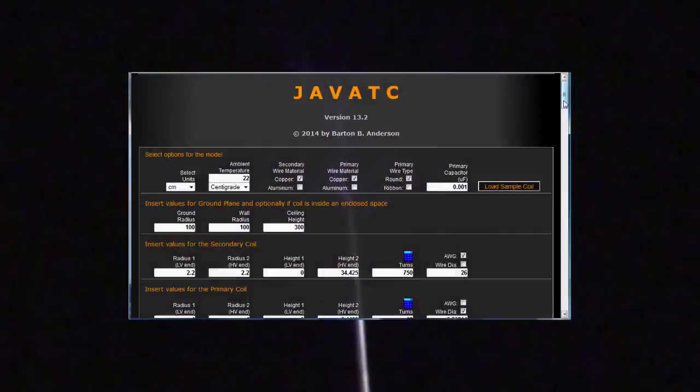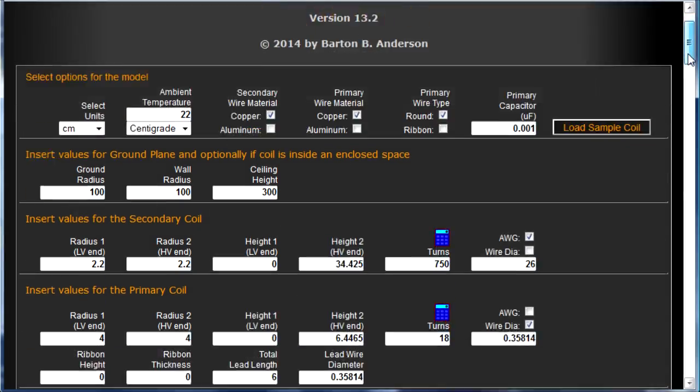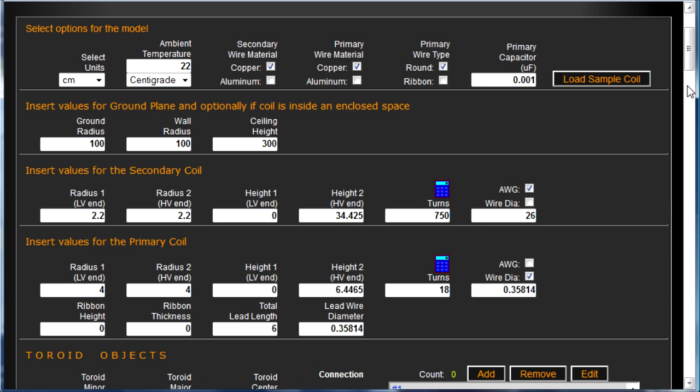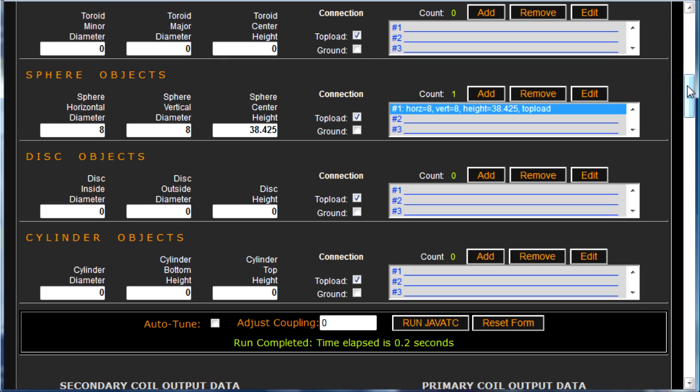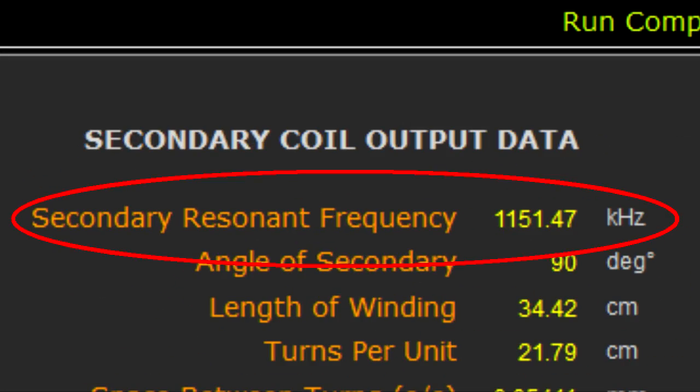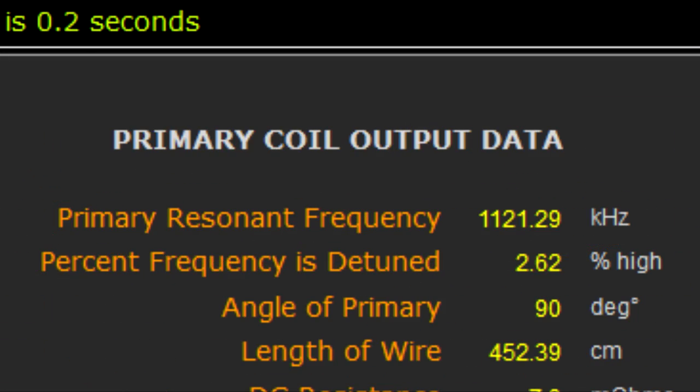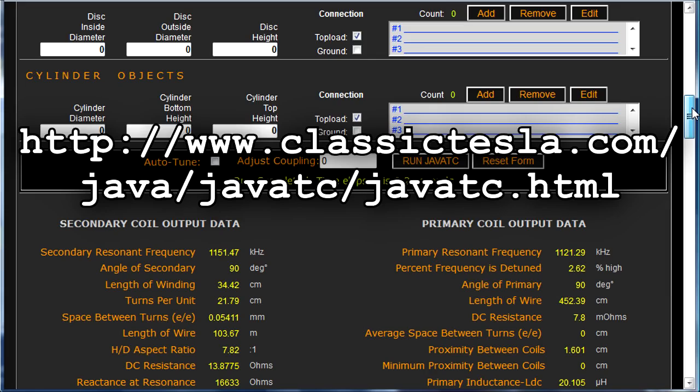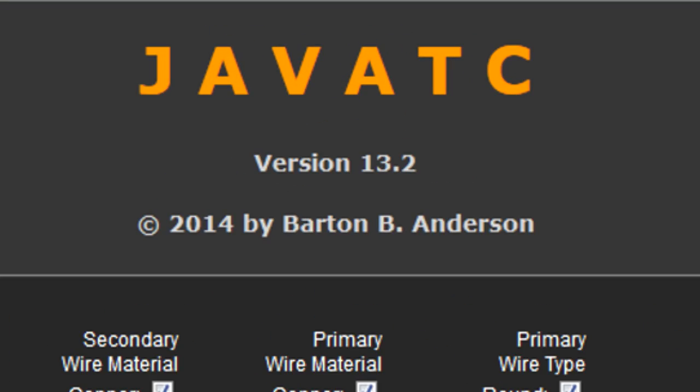I got them both to have the same resonant frequency by first using an online calculator. I spent a lot of time playing with the dimensions to come up with something that I could build, and that caused the calculator to spit out frequencies that were close enough together. Here's the address of the calculator, and there's a link to it in the description of this video. It's the popular JavaTC calculator.